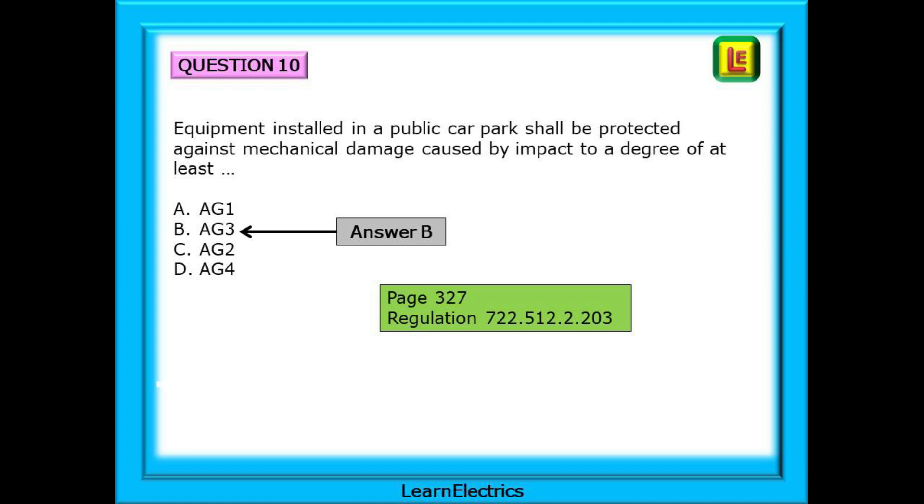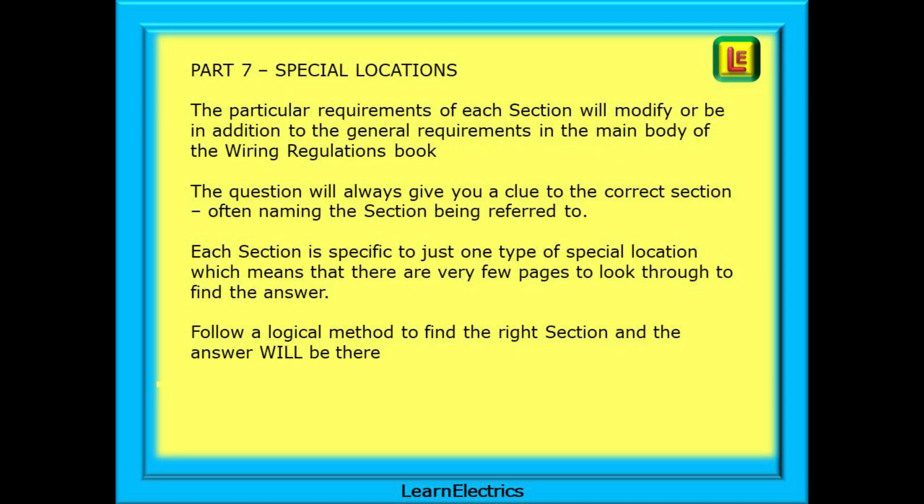A brief summary then: The particular requirements of each section will modify or be in addition to the general requirements in the main body of the Wiring Regulations book. The question will always give you a clue to the correct section, often naming the section being referred to. Each section is specific to just one type of special location which means that there are very few pages to look through to find the answer. And if you follow a logical method to find the right section, the answer will be there.